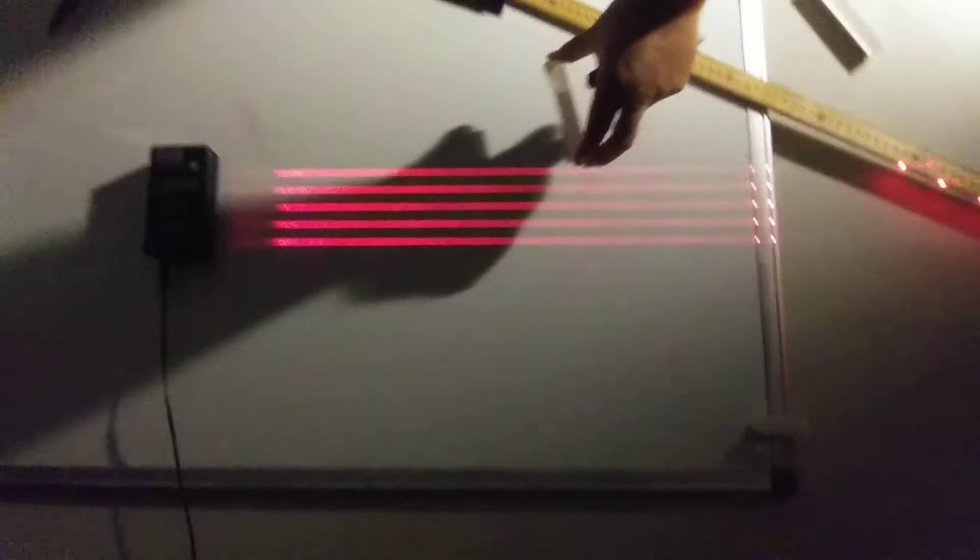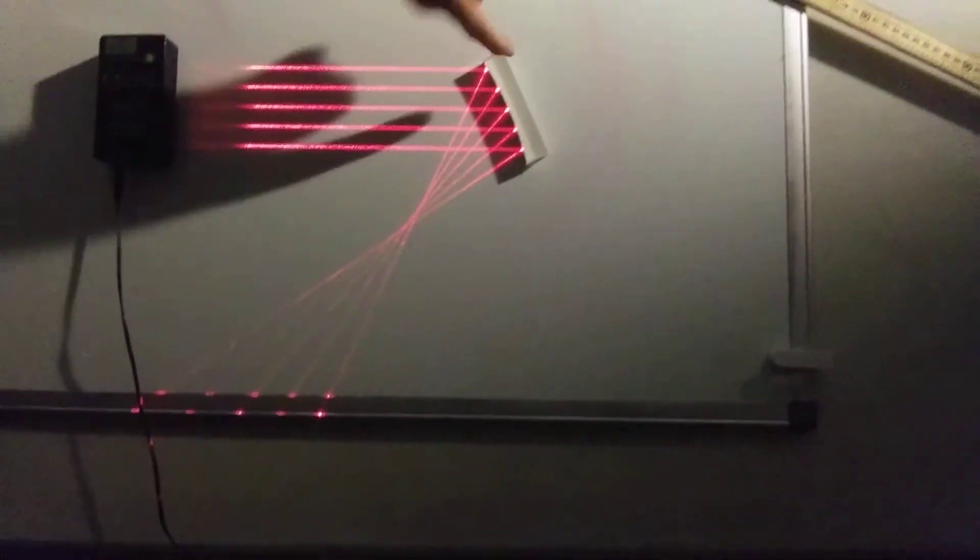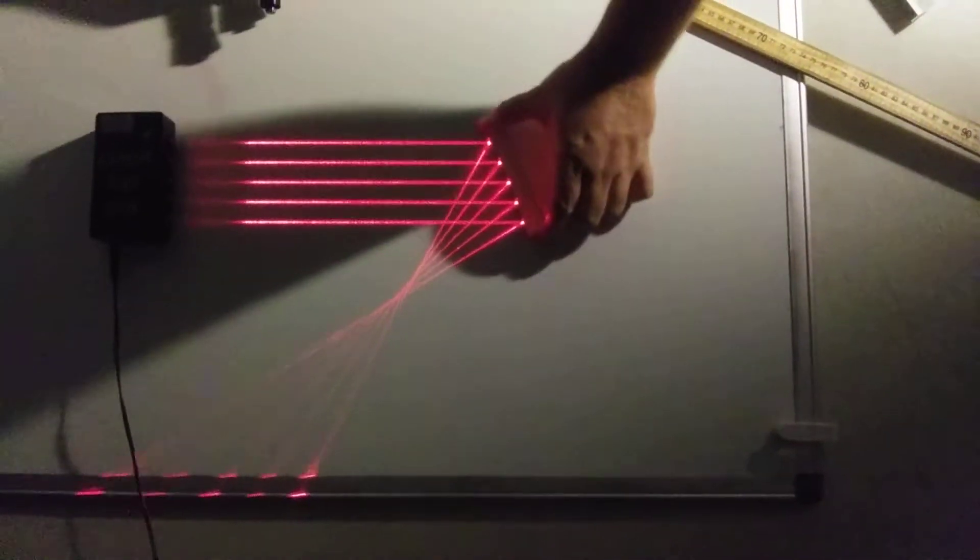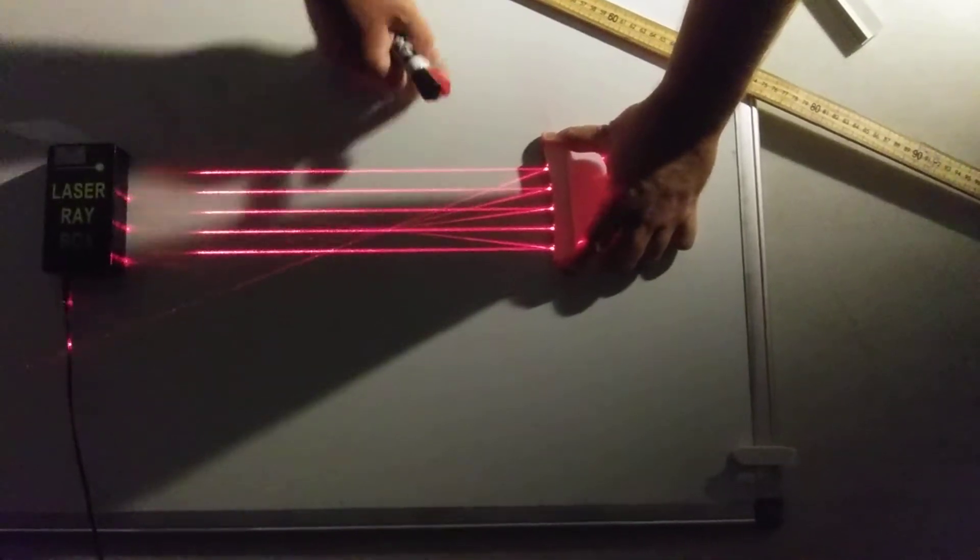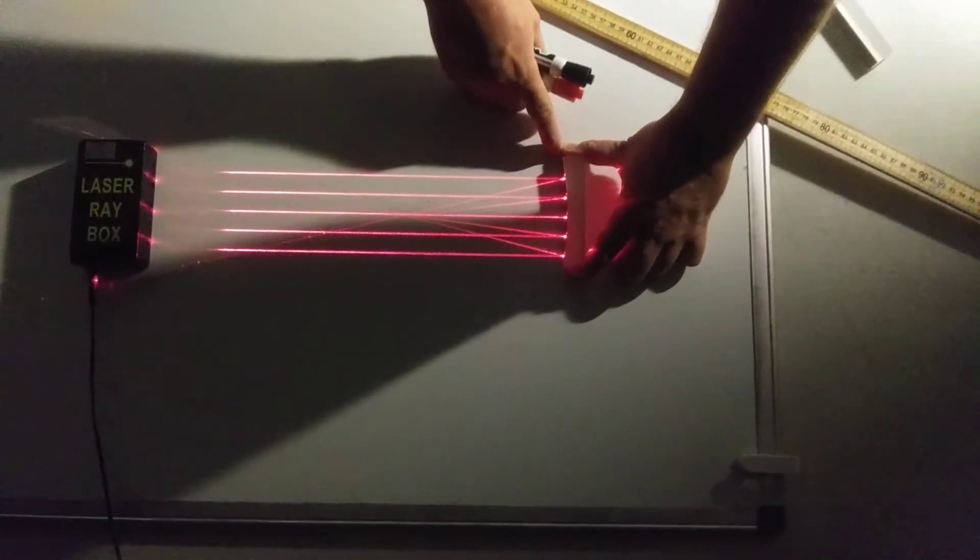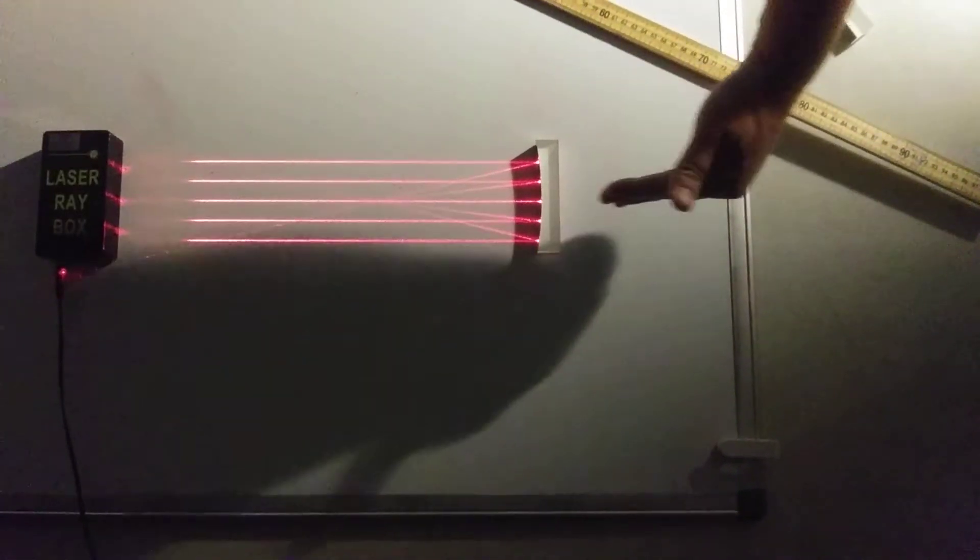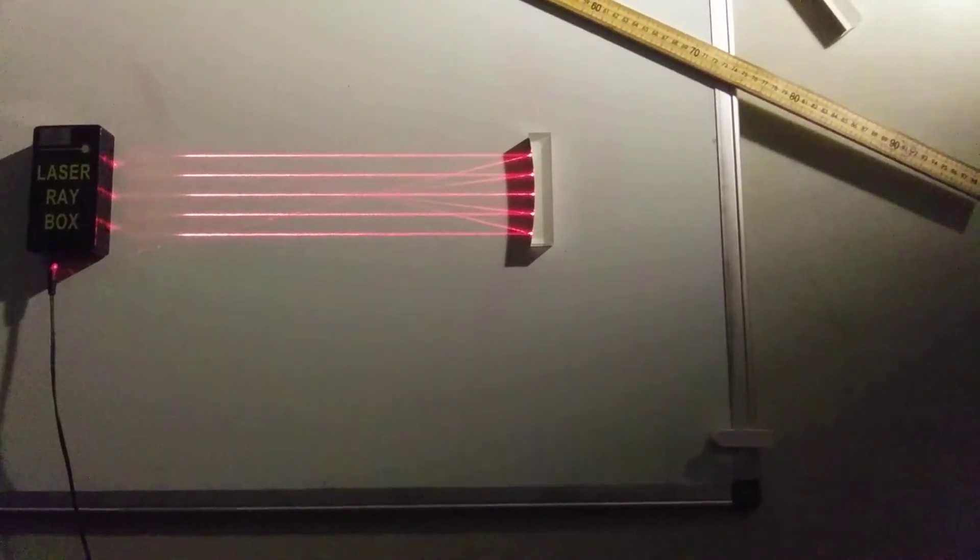And so now what I'm going to do is put this here and you can see that the five beams come in and they don't all come off at the same angle. So I can adjust this until this focal point is right on the center beam and that will tell me that the optical axis of the mirror is co-linear with the middle line of the laser ray box.